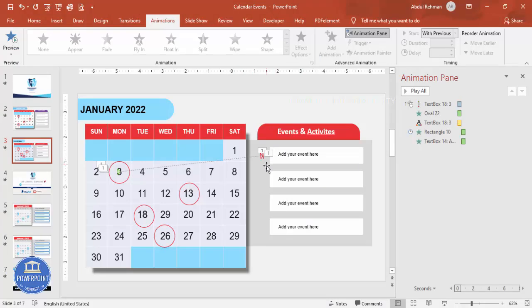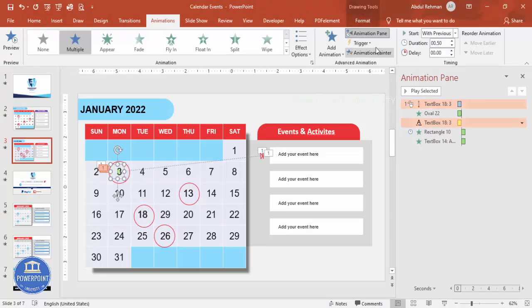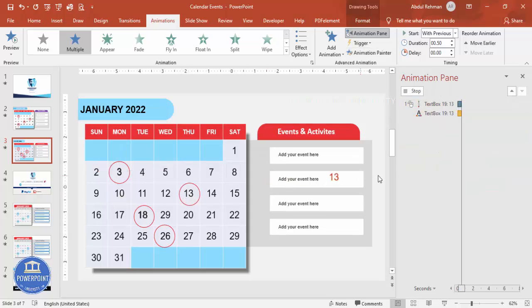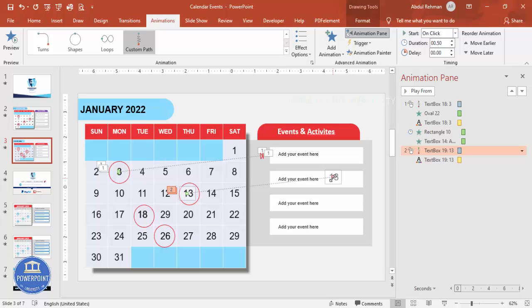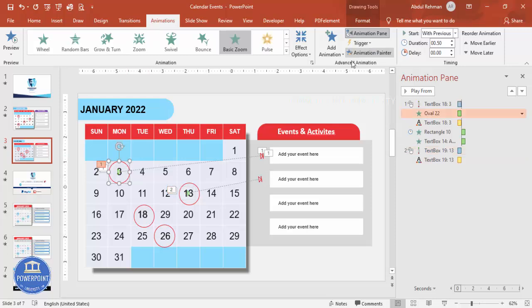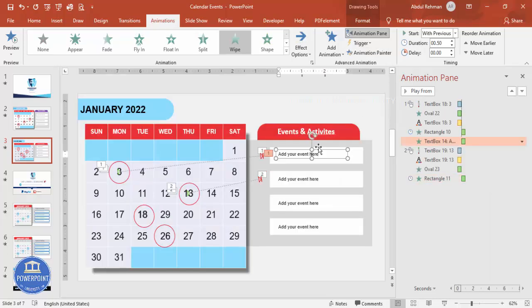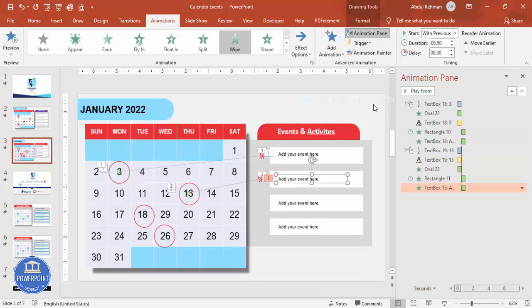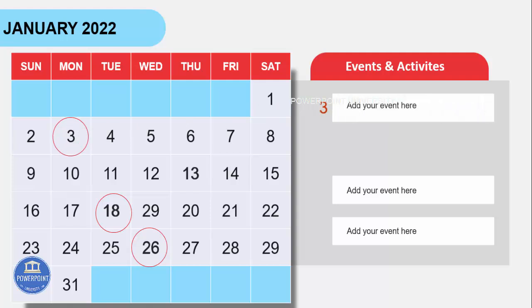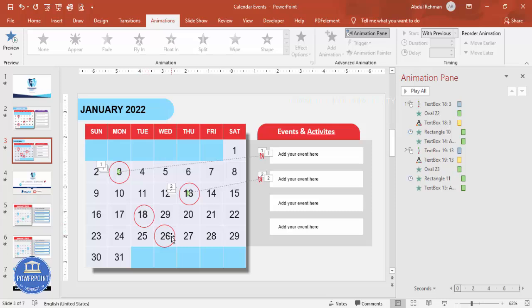Now it's easy to apply the rest of the animations. Select the number 3 text, use Animation Painter, and click on the 13th text — just arrange it to the correct position. Then select the circle for the 3rd, click Animation Painter, and apply it to the 13th circle. Do the same for the event box and text. Repeat this process for the 18th and 26th. This is the complete January 2022 calendar — you can create it for any month of your choice.